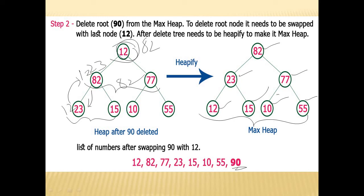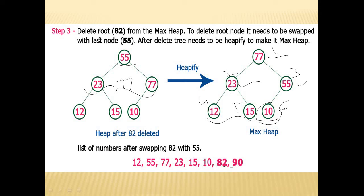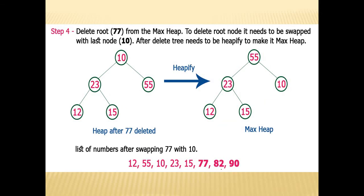After removing 82, replace the root with 55. But again we have a heap problem: its children are 23 and 77, and 55 is less than 77. So 77 should come up as root. Then 55 moves down. After heapifying, we remove the next root 77 and replace it with the last element 10.